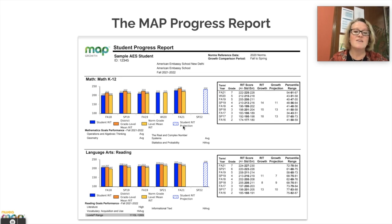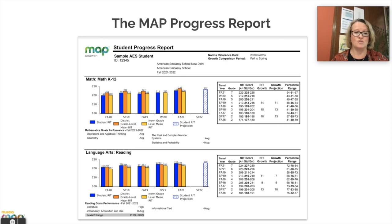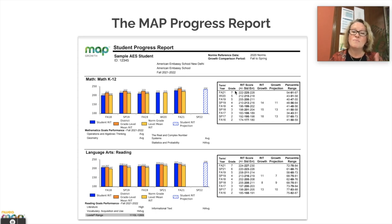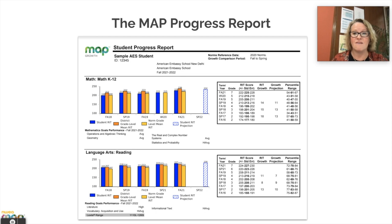What you will also see here is a student RIT growth projection. This is something we are keeping an eye on, and this is the goal for students. On the right, you may have several test events or a single test event. If your student has been here for many years, you will see this growth over time since they've been here. If they've only been here for the past year and a half, you will probably only see one event.